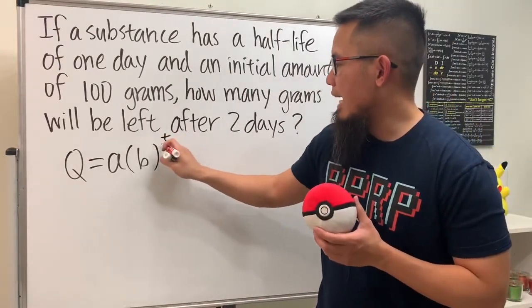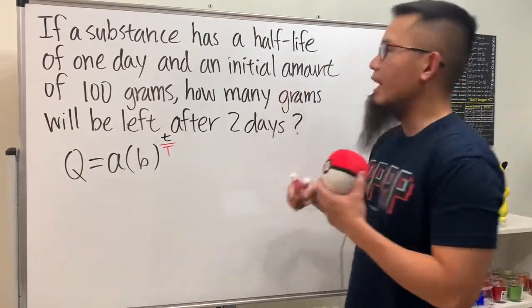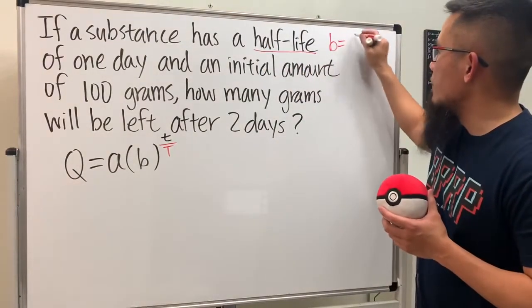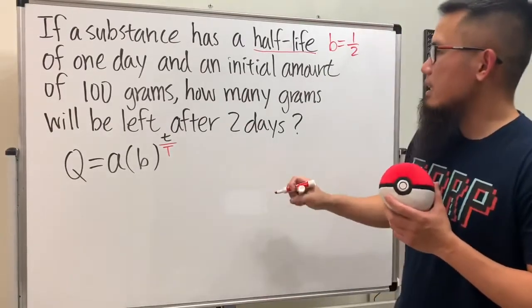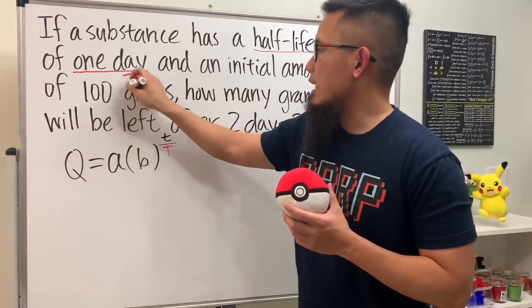Let's go back and see what's up with this half-life. This means b will be 1/2, and it says one day, so capital T will be equal to 1 because it takes one day for the decay to happen.